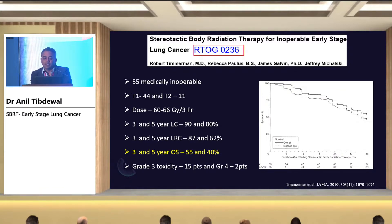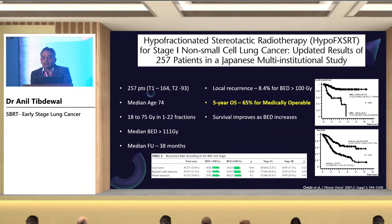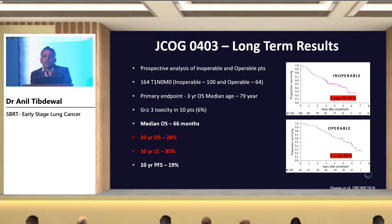However, grade 3 toxicity was seen in 15 patients in RTOG 0236 because the dose per fraction used was 20 Gy, which is a very large fraction. The Japanese study has shown that we need to deliver a minimum biologically effective dose of 100 Gy — the BED should be at least 100 Gy, otherwise local control and overall survival can be poor. The Japanese study also reported a 10-year overall survival of 25%, meaning one in four patients was alive at 10 years, with 10-year local control of 85%.